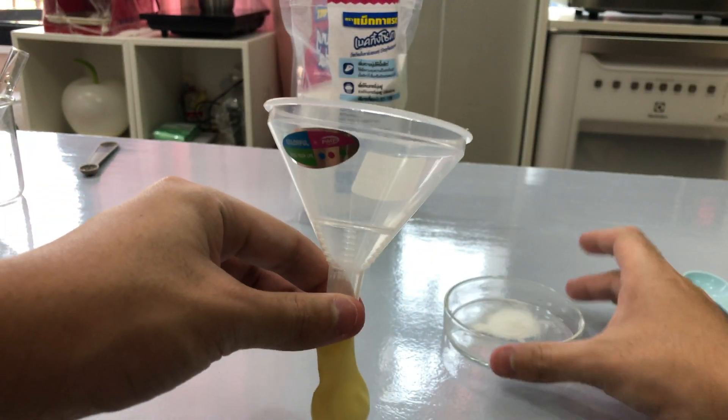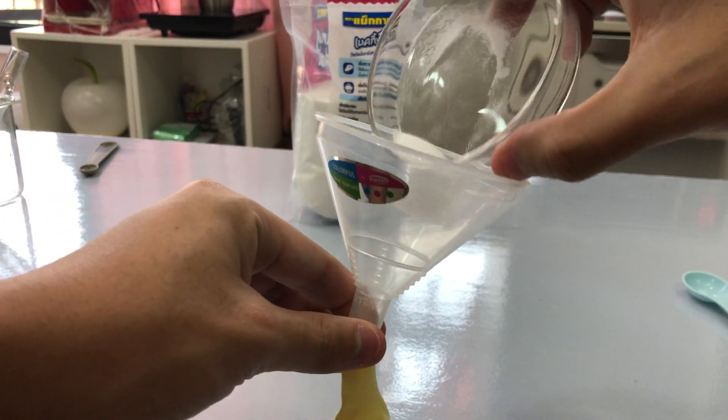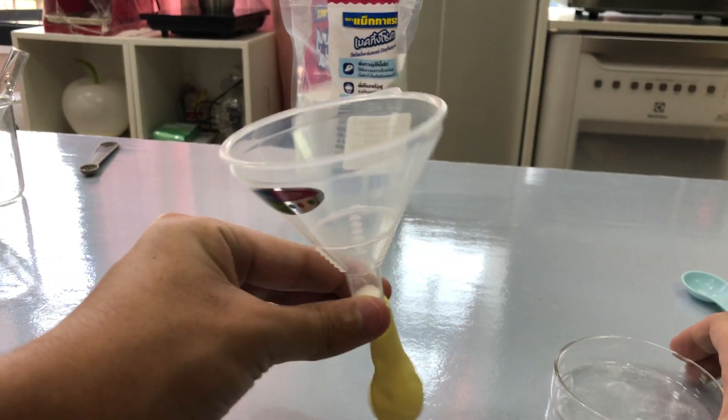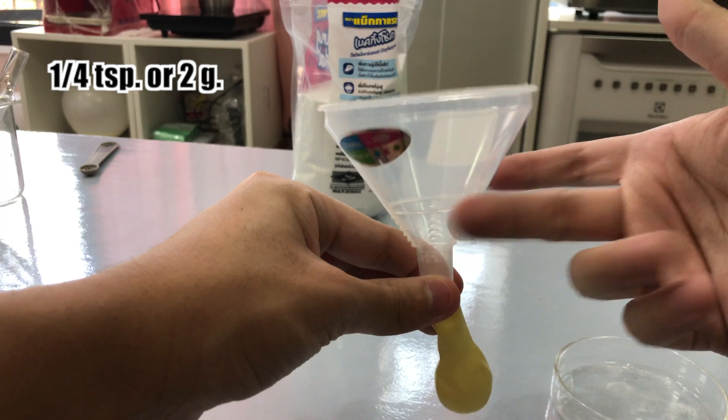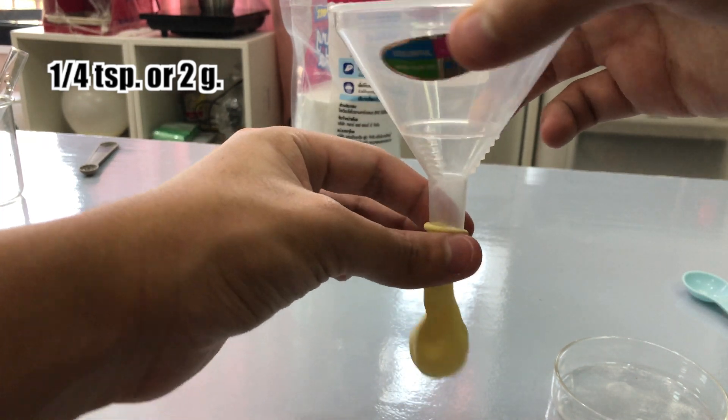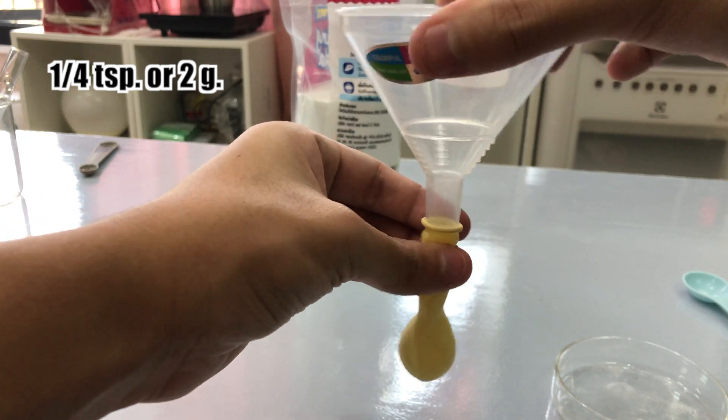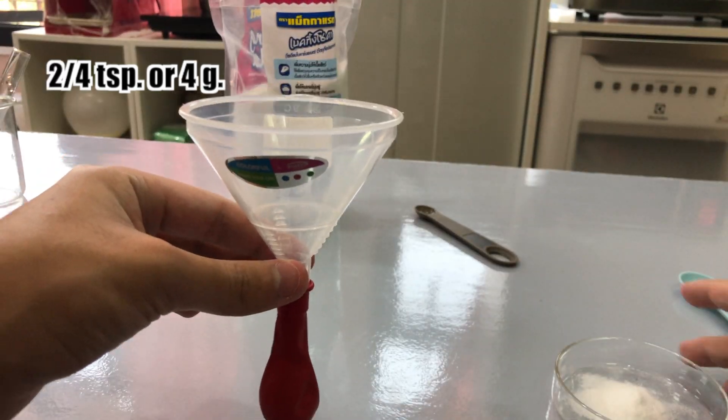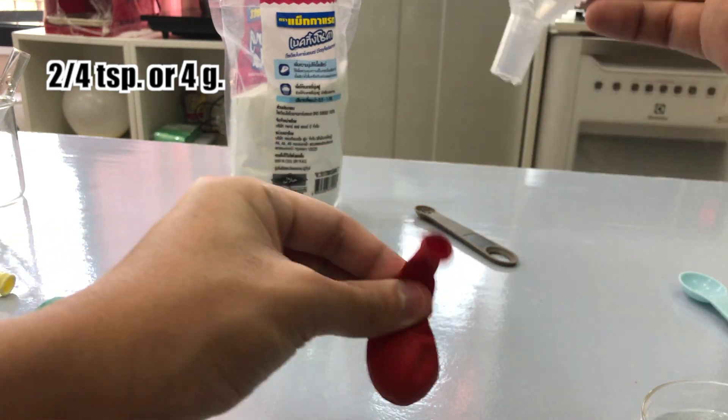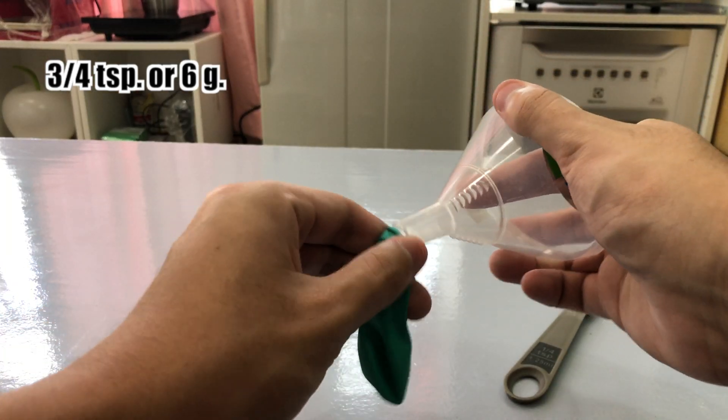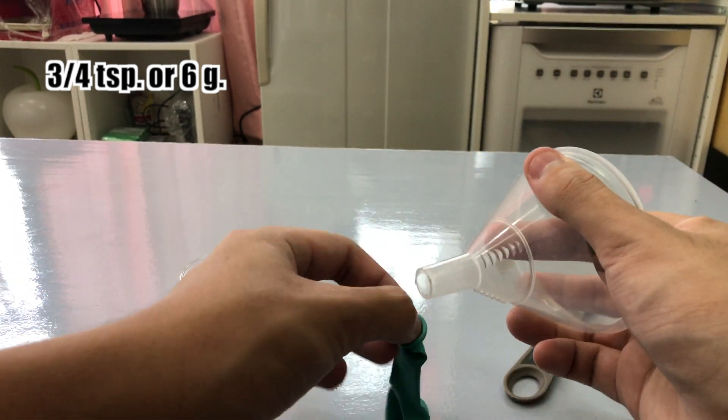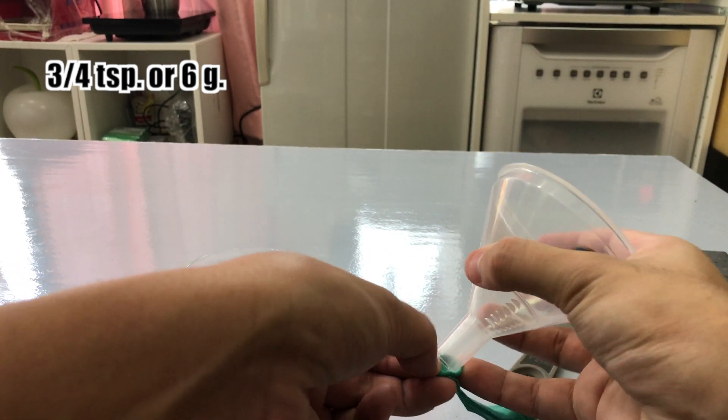In these experiments, we use different amounts of sodium bicarbonate in different colored balloons. In the yellow one, we measure about 1/4 teaspoon or 2 grams. In the red balloon, we measure 2/4 teaspoon or 4 grams. And in the green one, we use 3/4 teaspoon or 6 grams.